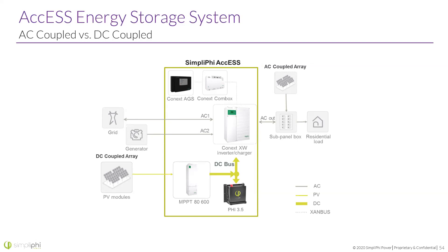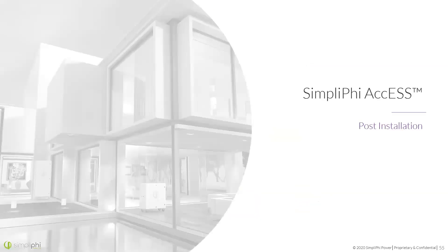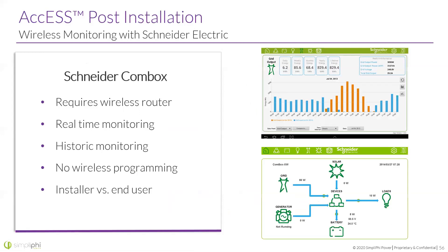Generator support is available — for the Schneider unit, add the AGS automatic generator start function. No matter which unit you choose, the automatic transfer switch is built in: when the grid goes down, the unit automatically disconnects and powers whatever's on your sub-panel until the grid returns. No external ATS needed. Monitoring is handled through Schneider's and SolarK's existing platforms — real-time and historical data accessible on laptop, phone, or tablet.